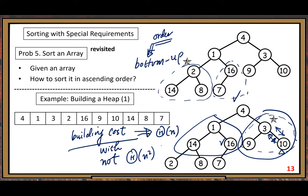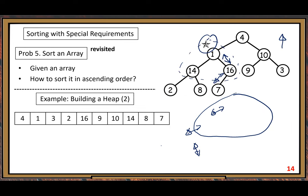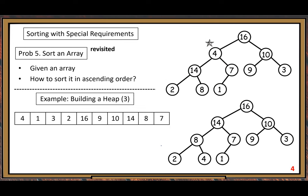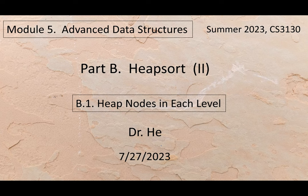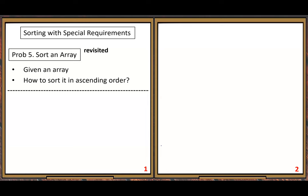So we've finished this part. In Part B, to understand why it is big-Theta of n, we need to learn some basic information. This is B.1: heap nodes in each level — we need to learn this information first.